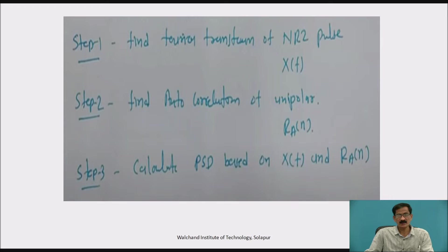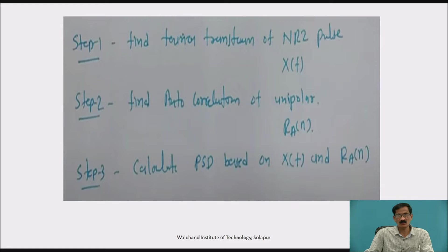To get the Power Spectral Density, we follow these steps. Step 1: find the Fourier transform of the NRZ pulse, that is X of F. Step 2: find the autocorrelation of bipolar, that is R_A of N. Then calculate the Power Spectrum Density based on X of F and R_A of N.